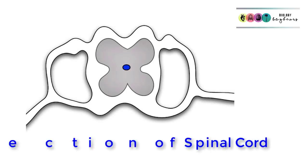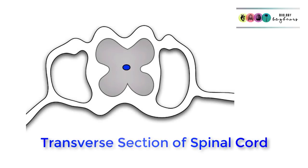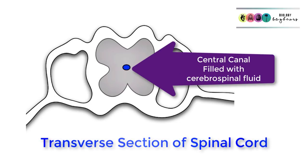This is a transverse section of the spinal cord, and it's really important that you can draw and label it and put in arrows where necessary. Starting at the centre, you can see this circle — this is called the central canal, and it's filled with a liquid called cerebrospinal fluid. That liquid has a protective function and carries nutrients, running all the way from the base of the spinal cord up to the brain.